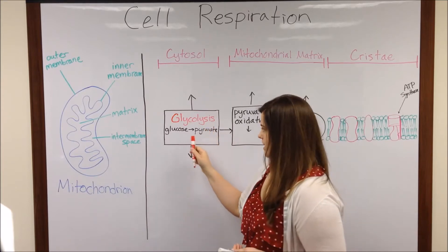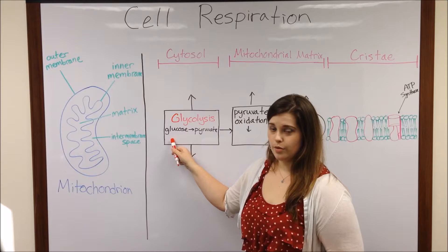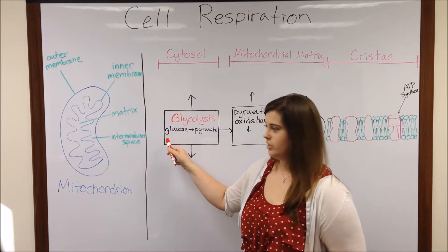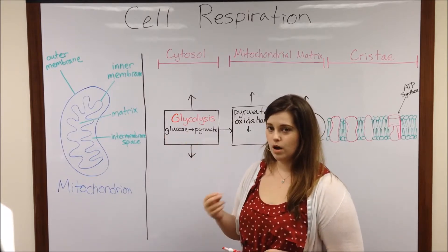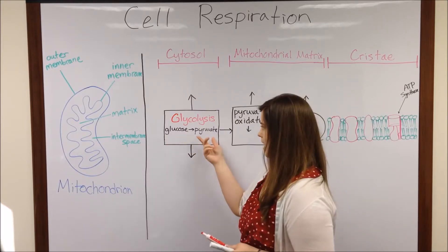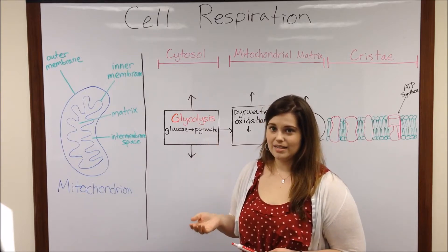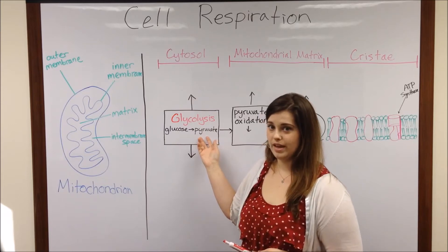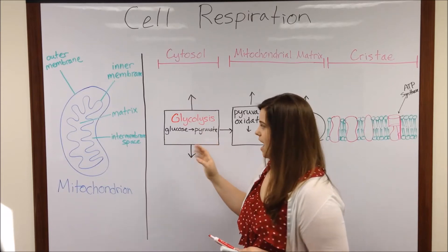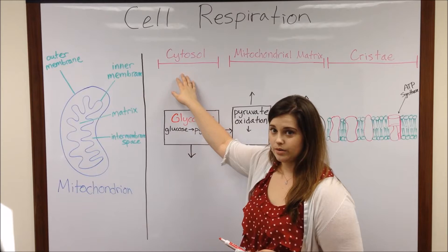Glycolysis begins with glucose, which comes from the food that we ingest. Glucose is converted to a molecule called pyruvate — another name for pyruvate is pyruvic acid — in 10 enzymatically catalyzed steps. This happens in the cytosol.